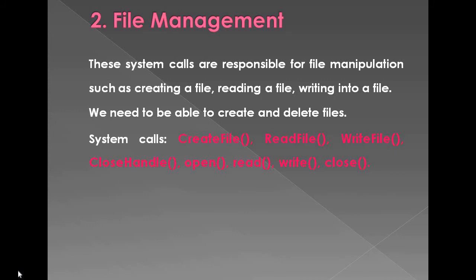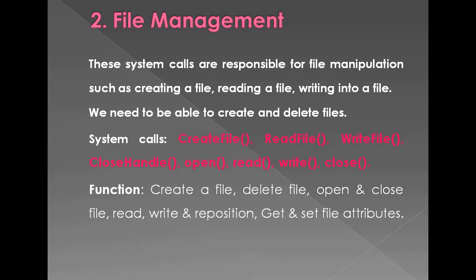For either files or directories, we need to determine the values of various attributes and reset them if necessary. Examples of file management system calls include: create file, read file, write file, close handle, open, read, write, and close. The main functions are: creating and deleting a file, opening and closing a file, reading, writing, and repositioning, and getting and setting file attributes. These same functions also apply to directories — creating, deleting, opening, closing, and reading and writing into a directory.